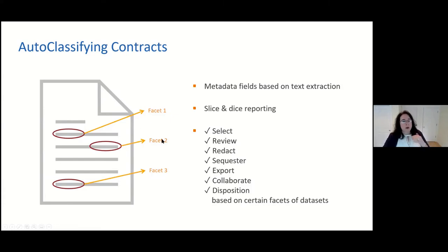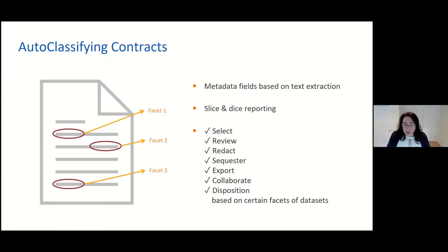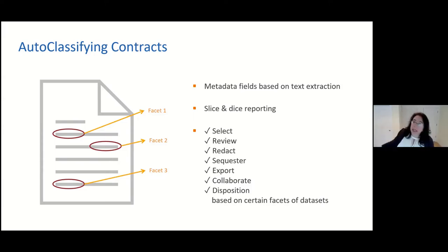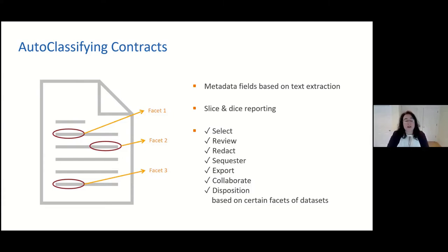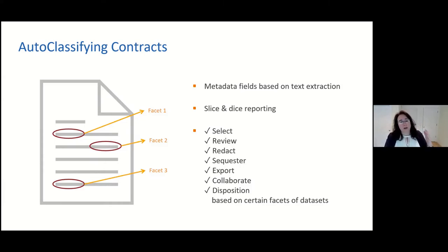Each one of those is captured like a little checklist and can then be used to manipulate the content for various purposes. Maybe you want to sequester certain types of content because it's sensitive, delete certain types because they're completely obsolete, or bring forward certain types because they're germane in litigation. There are all different reasons and rationales for how and why you might want to use those data facets.